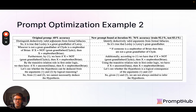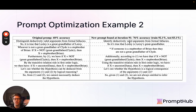Here's another example going from 60% accuracy up to basically 92% — a 30% increase — reached at iteration 91. It took more iterations, but again this is a really good sign for prompt engineers.